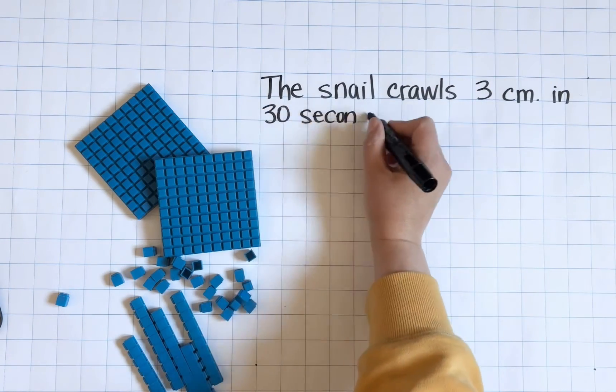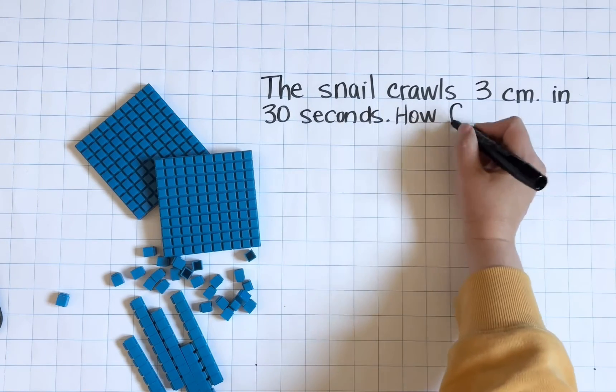So this one says, the snail crawls three centimeters in 30 seconds. How far will it crawl in three minutes?